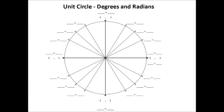For our degrees and radians, we need to remember that a whole circle is 360 degrees, and it is also 2π, because this is the unit circle and our radius is 1. So 2πr, which is the circumference of the circle, turns into 2π.